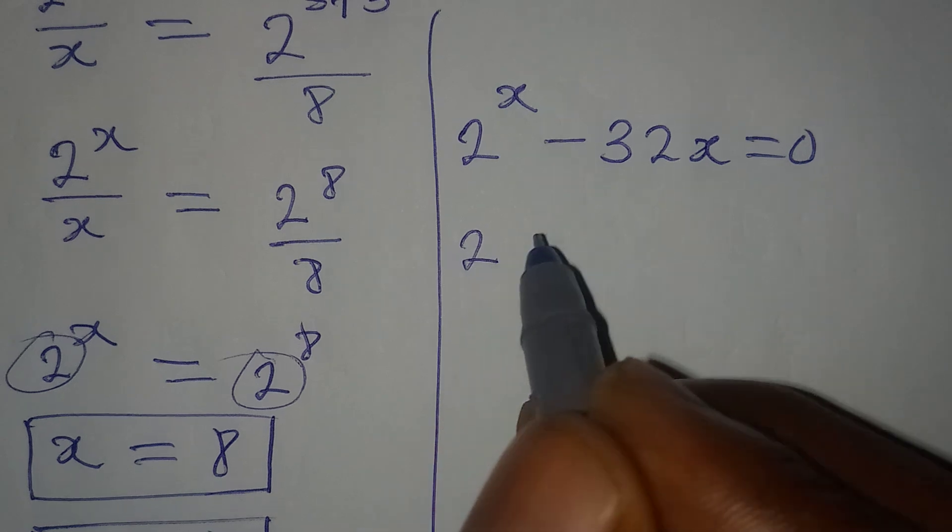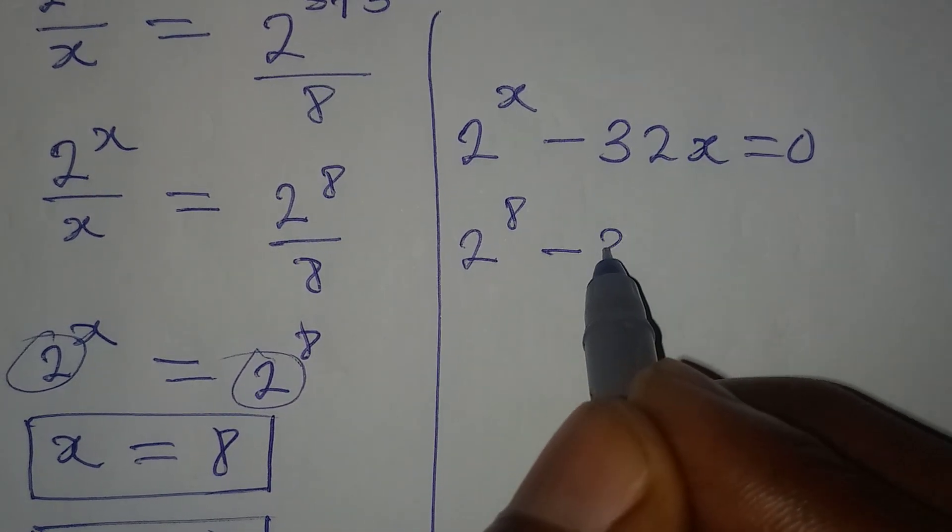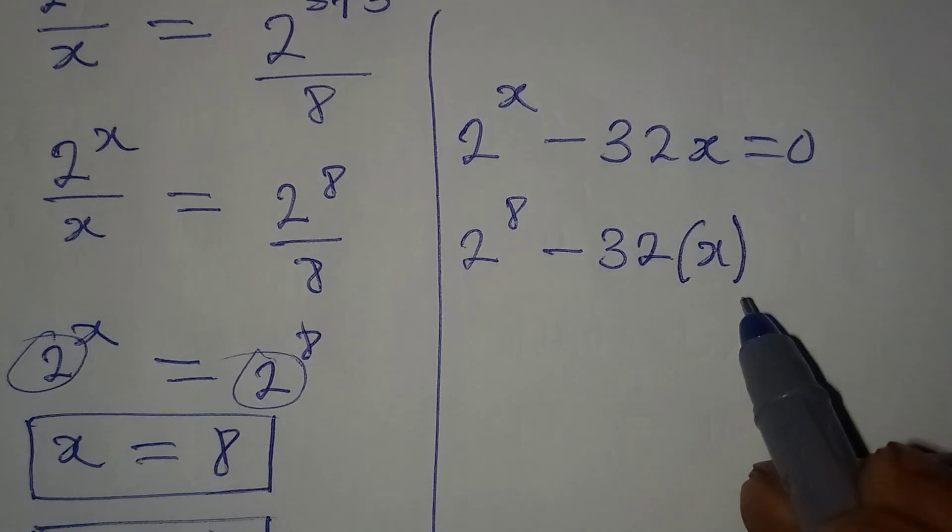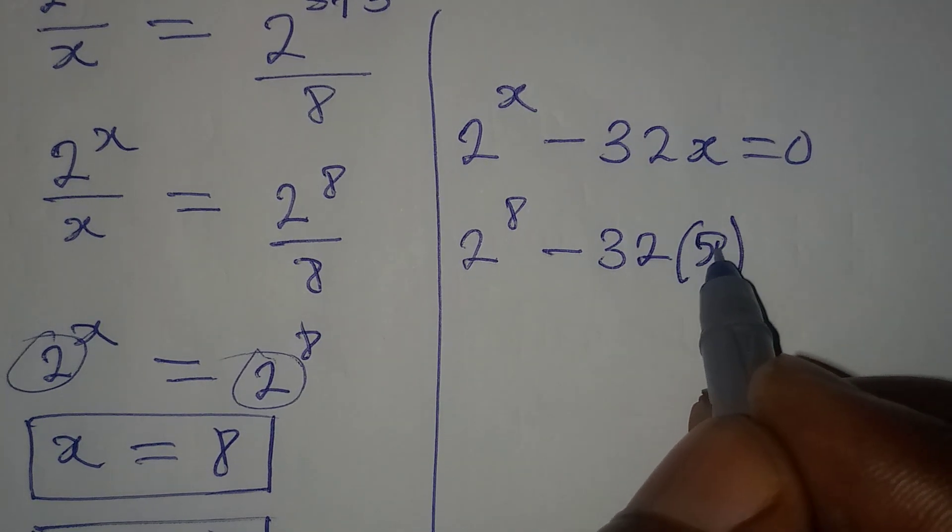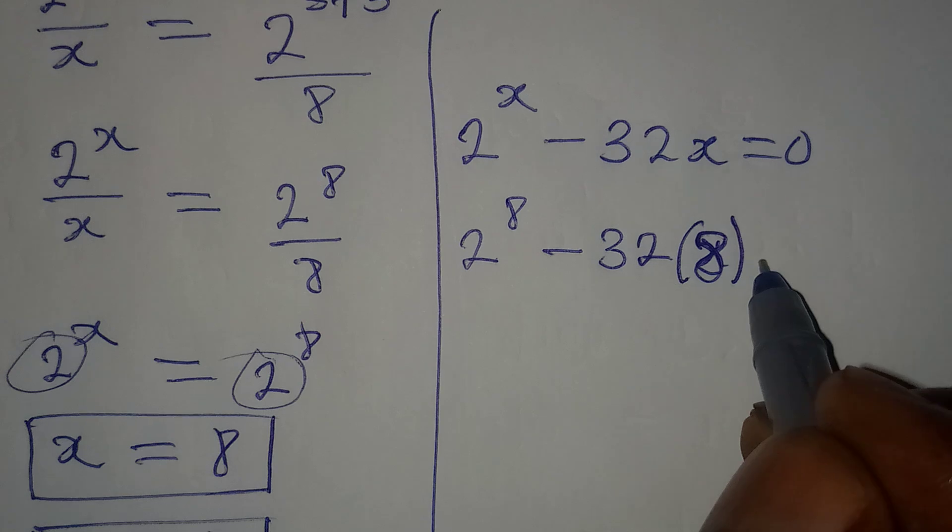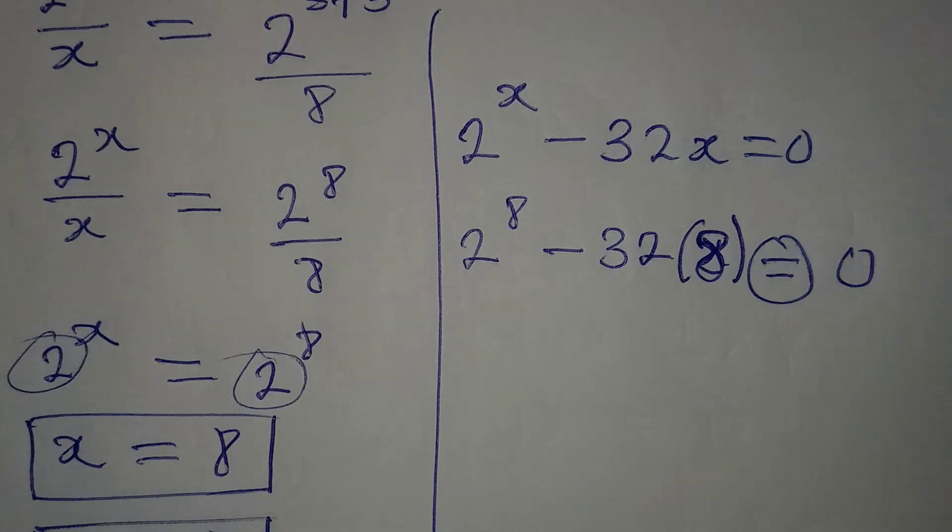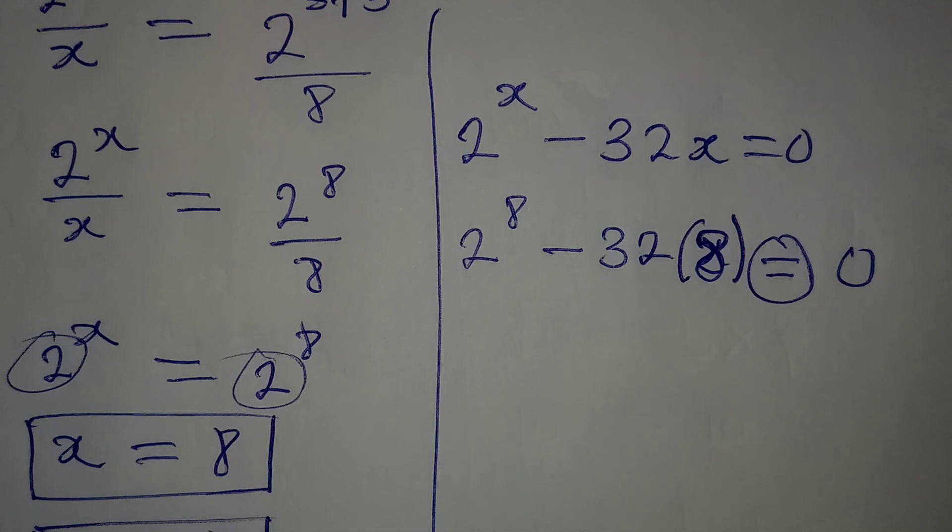So I have to put 2 to the power of 8 minus 32 multiply by x. But our x is now 8, so replace it with 8 to be equal to 0. So let me circle it.